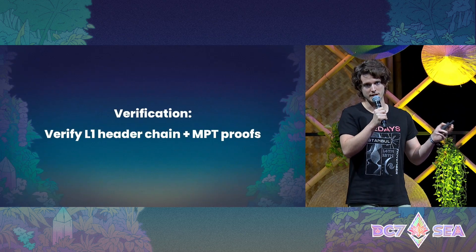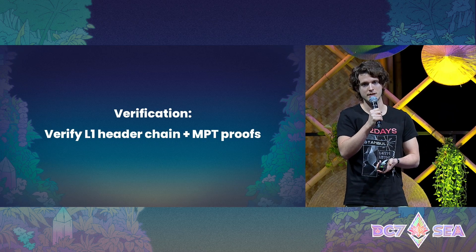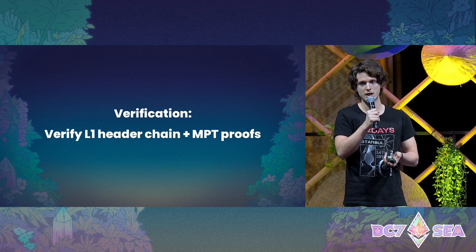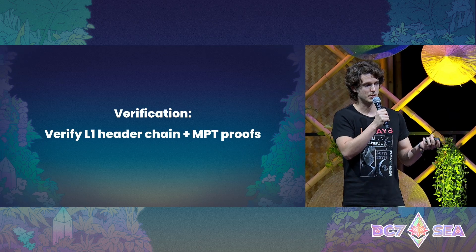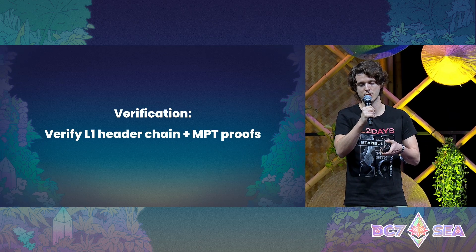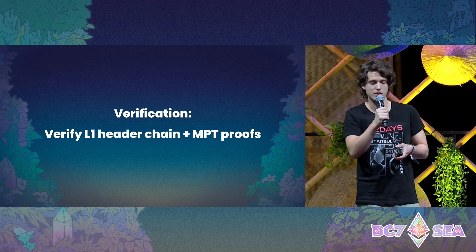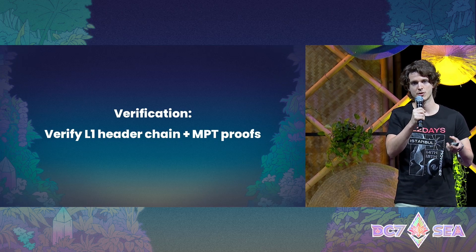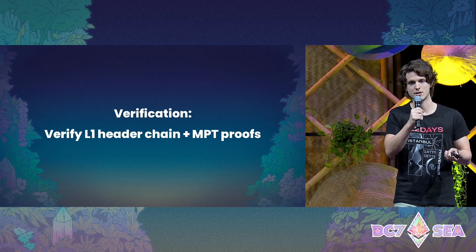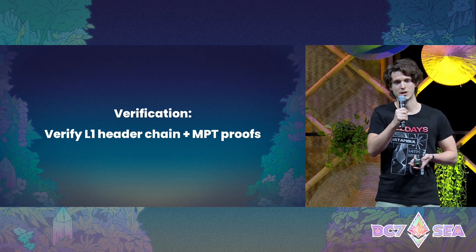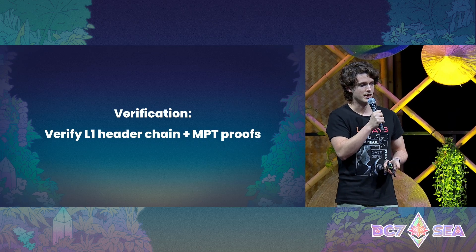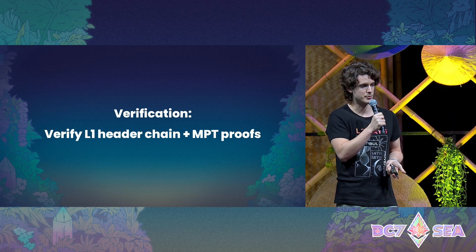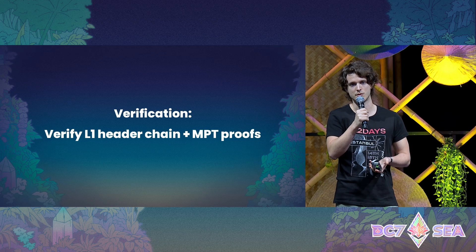On the verification side, we need to verify the block hash relay — verify the L1 header chain and verify that the sequencer relayed the correct information. As part of the proving process, the sequencer also fetches these MPT proofs so that you as the developer don't need to. Inside the prover, we verify all these L1 MPT proofs and make sure they are all correct.